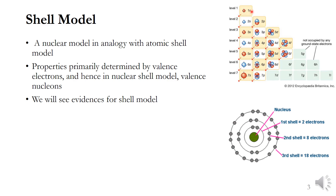In the atomic case, electrons are distributed in orbits — 1s, 2s, 2p, 3s — in this order, obeying the Pauli exclusion principle, in different shells with subshells in each shell. The electrons are filled in energy order obeying the Pauli exclusion principle. Just like this, we assume that nucleons are also filled inside shells, with subshells filled according to their energy and spin.